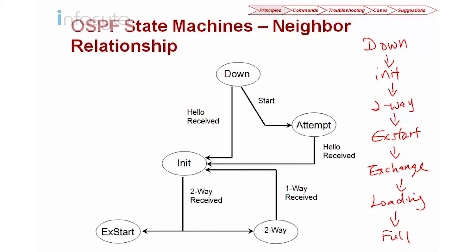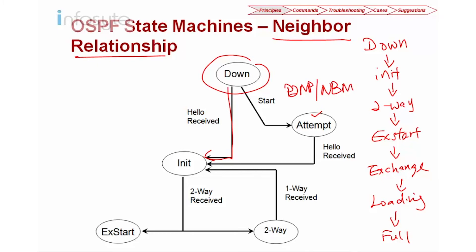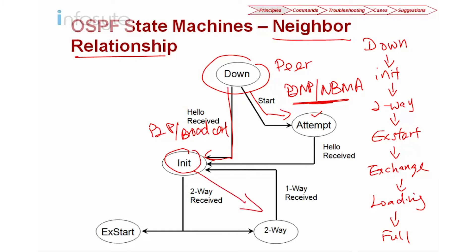Starting from Down state, they will normally go directly to Init state. The Attempt state is only used when you are running point-to-multipoint or NBMA, because for NBMA or point-to-multipoint you need to specifically define your peer. So only point-to-multipoint and NBMA go through Attempt. For point-to-point or broadcast, they go directly to Init, then to Two-Way, then to ExStart.